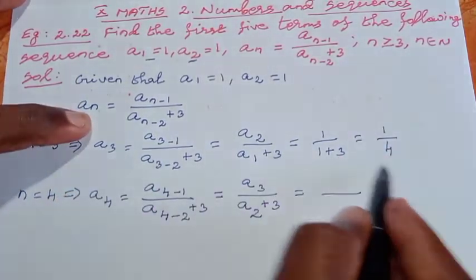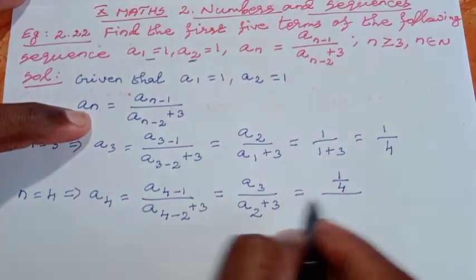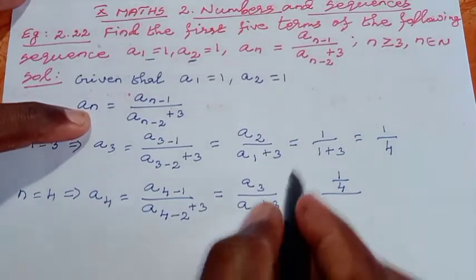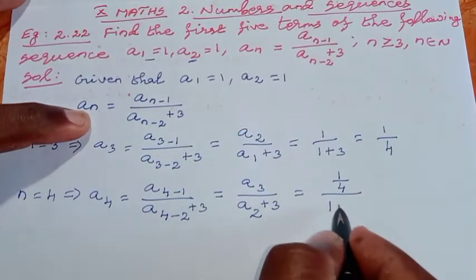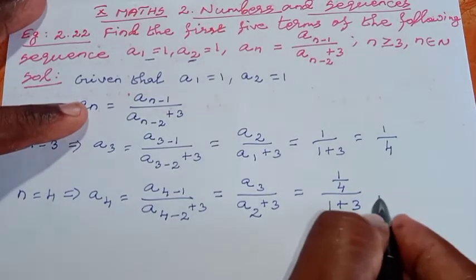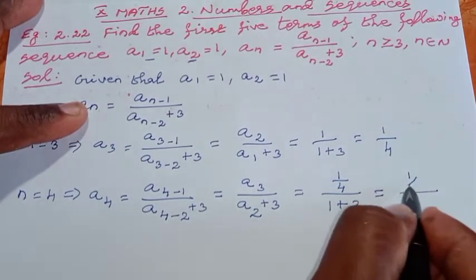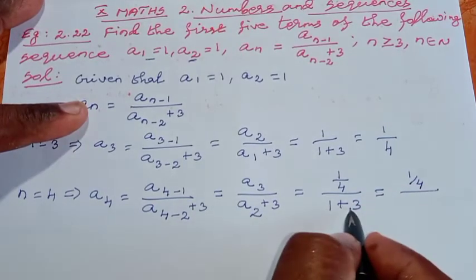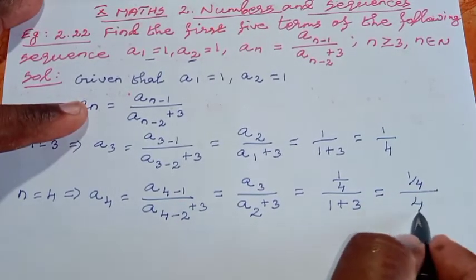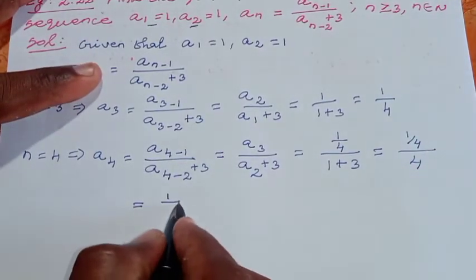This equals a₃, which we found to be 1/4, divided by a₂, which is 1, plus 3. So 1/4 divided by (1 + 3).